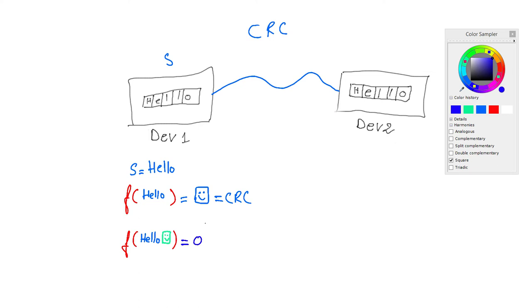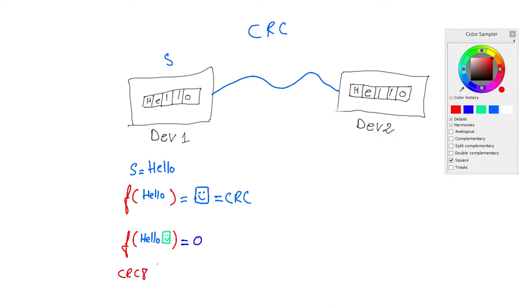You may not believe me, but I'm going to demonstrate it. And right now, if you're using a computer, a device, or a cell phone, this function is probably working in the background. This red function is called CRC. There are many CRCs — for example CRC8, CRC16, and CRC32 — and each CRC has different parameters.